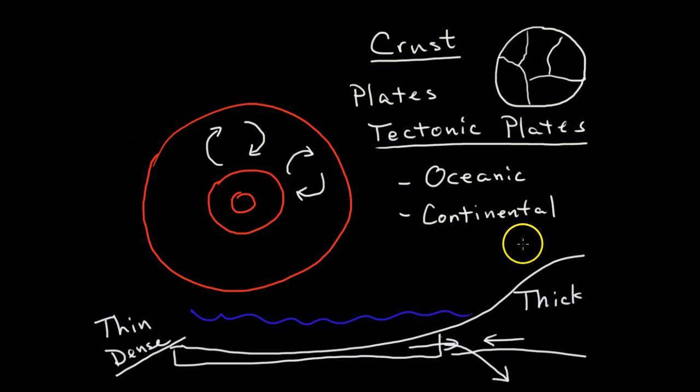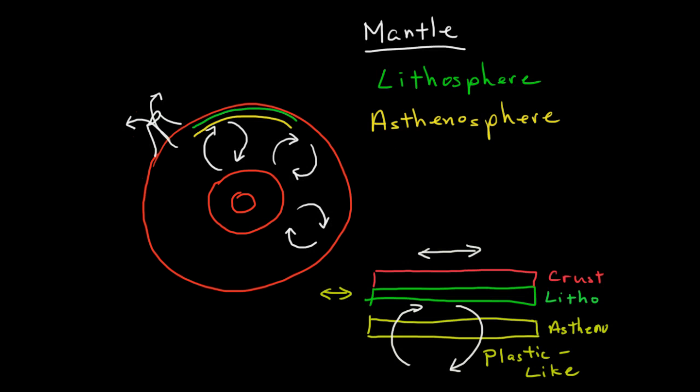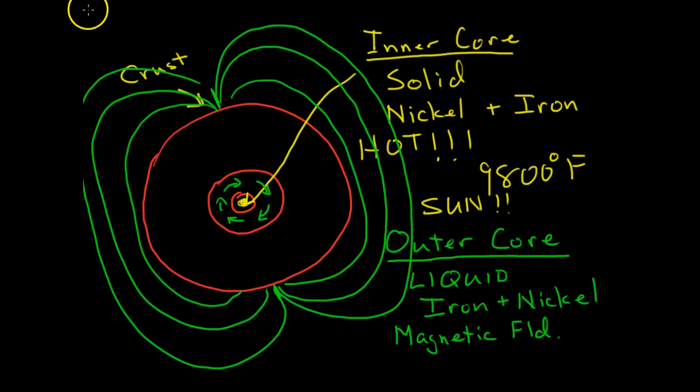So to review, we have the crust broken up into different plates. We have the mantle which has the lithosphere, the asthenosphere, and we have all of this movement inside of the mantle that is caused by convection currents, and that causes the crust to move. And then finally we have our inner core and the outer core. The outer core creates Earth's magnetic field, is liquid. The inner core is solid and is super super super hot. All right, I know it was long, hope you're still awake.